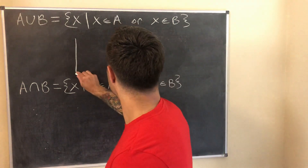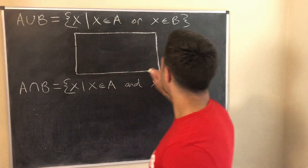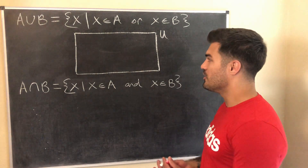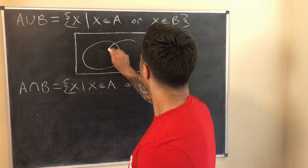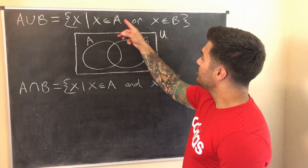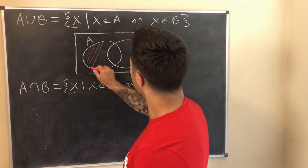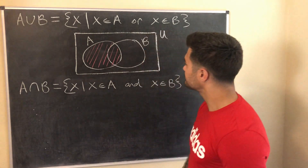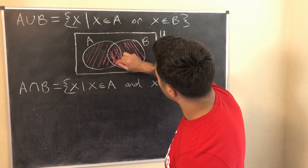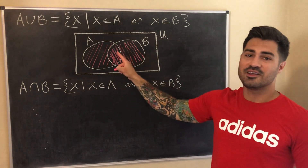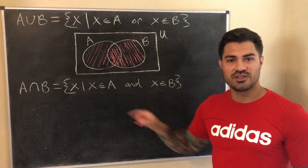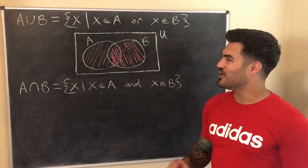Visually this makes sense with a Venn diagram. Here's the universal set — all the things we're considering subsets of. Here's set A and here's set B. All the elements in A are included, all the elements in B are included, and where they overlap that's fine — we still include the intersection where elements are in both A and B. This entire shaded region represents the union.